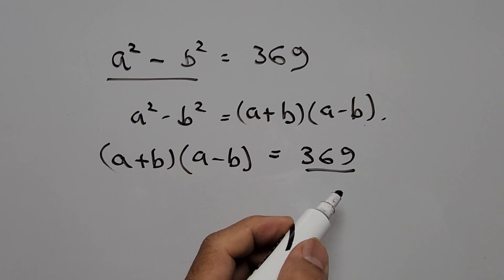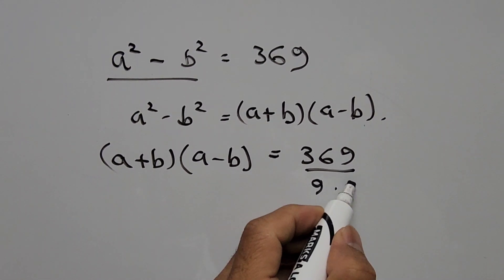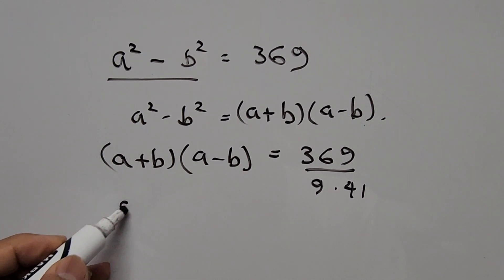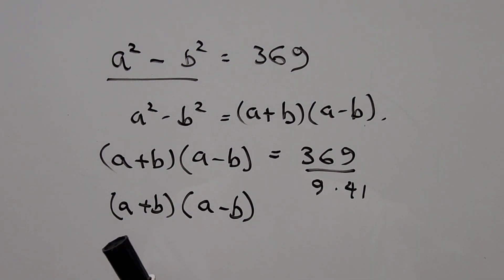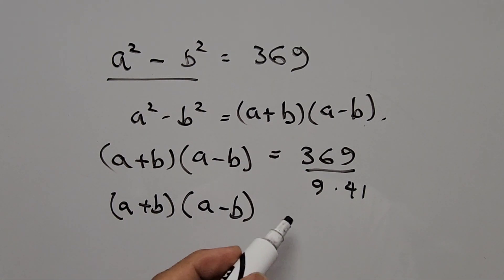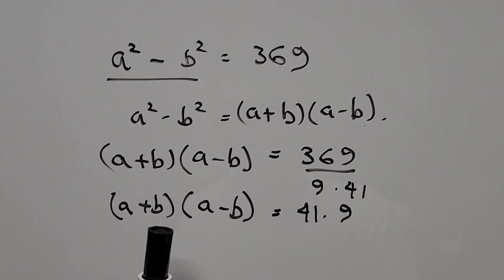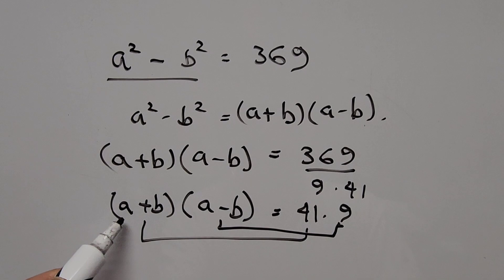The left hand side is expressed as two factors, so the right hand side must also be expressed as two factors. The factors of 369 are 9 times 41. Since a plus b must be bigger than a minus b, the right hand side becomes 41 times 9. We equate a plus b to 41 and a minus b to the smaller factor, 9.